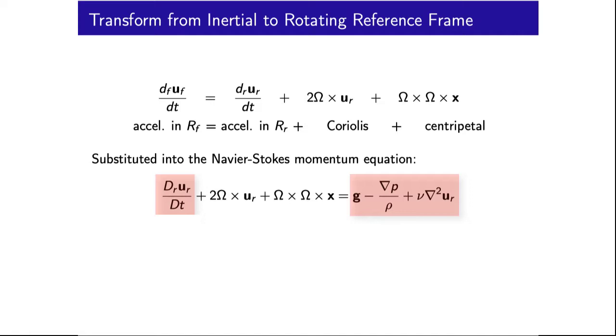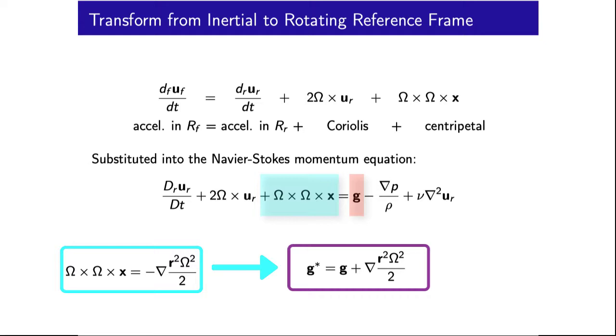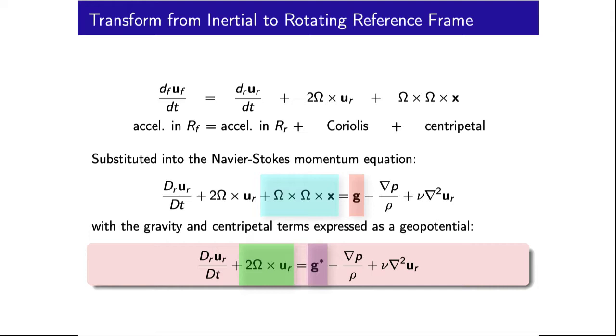Substituting this into the Navier-Stokes momentum equation gives us this familiar expression with these two additional terms. For geophysical applications, it is convenient to express the centripetal term as a potential in radial distance from the axis of rotation, allowing us to combine it with the gravitational potential to form this geopotential term, which can be incorporated into the Navier-Stokes equation.